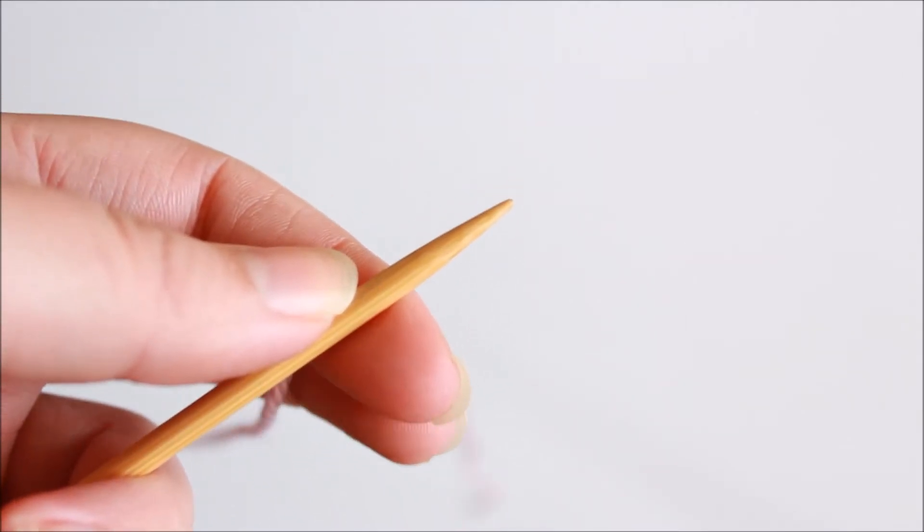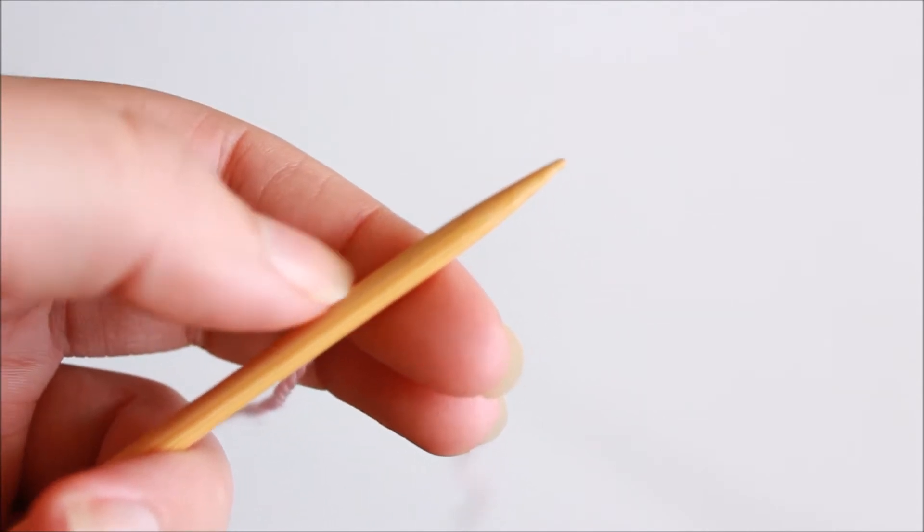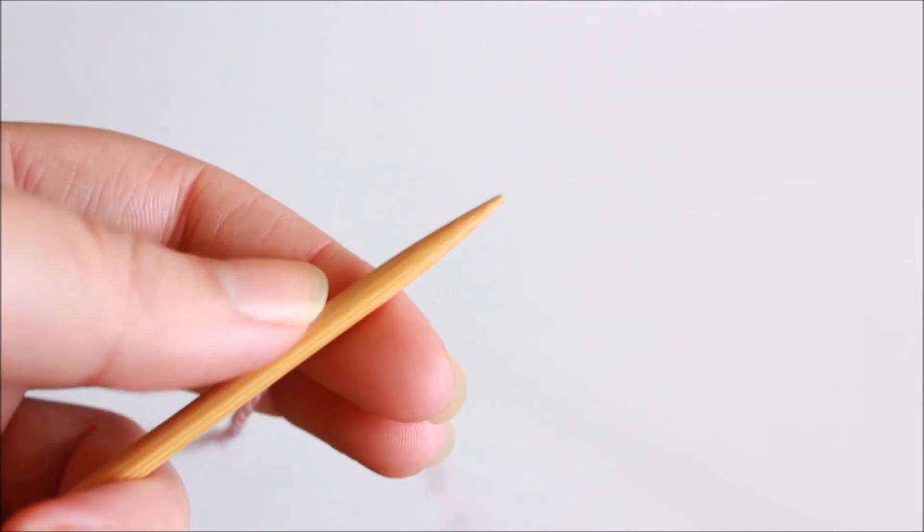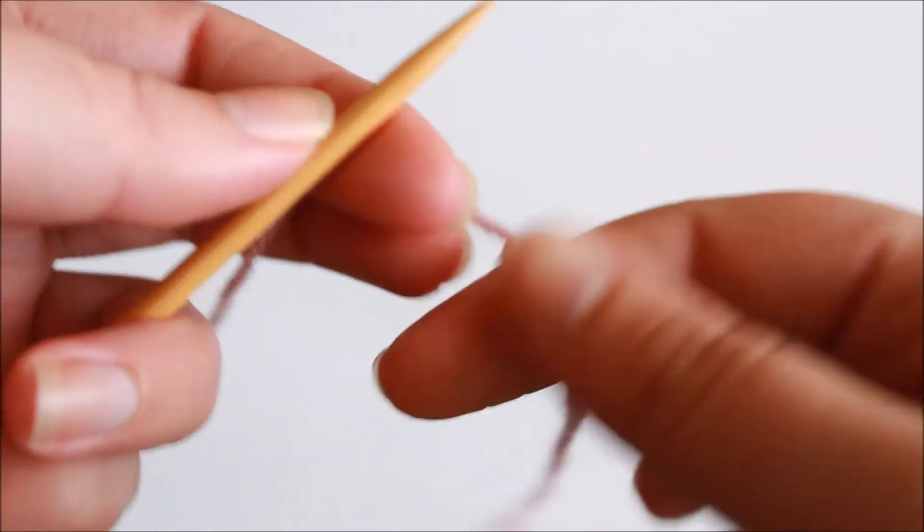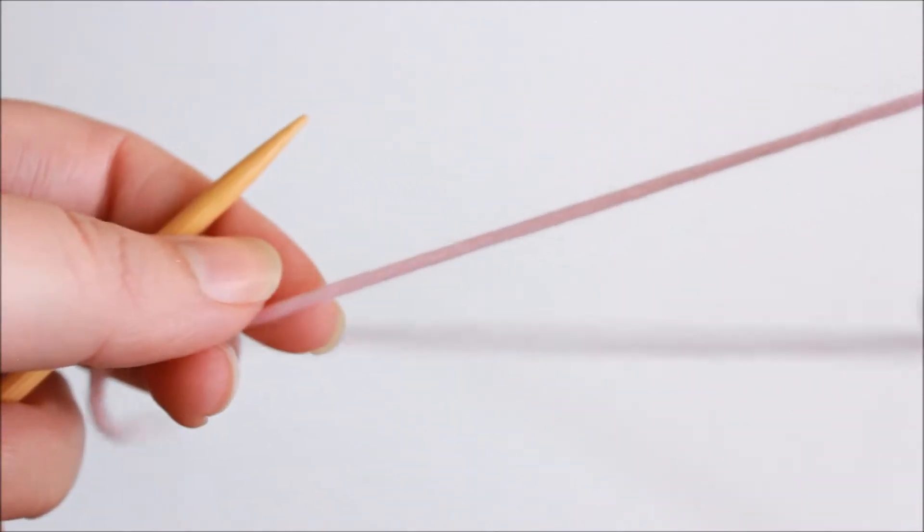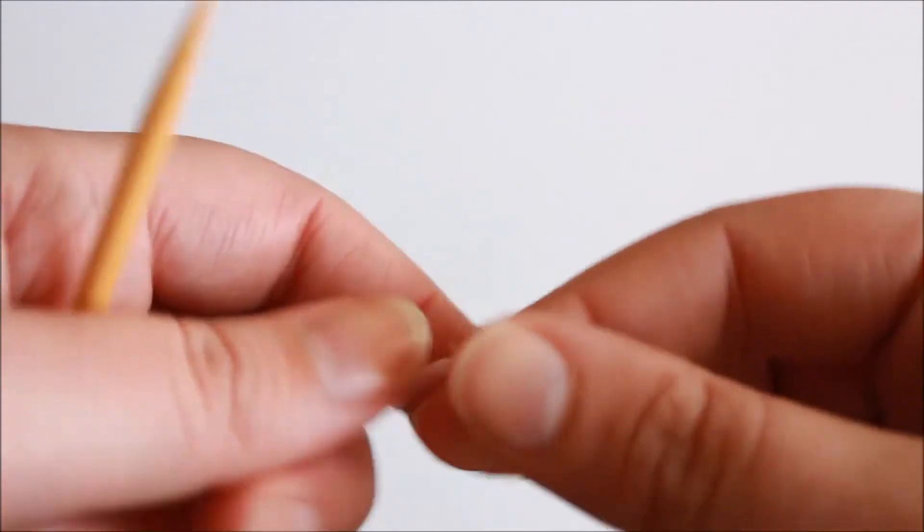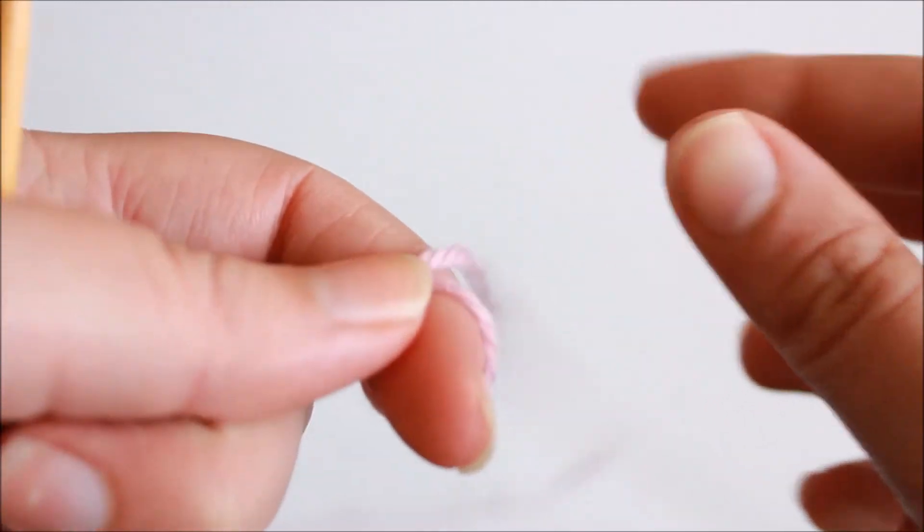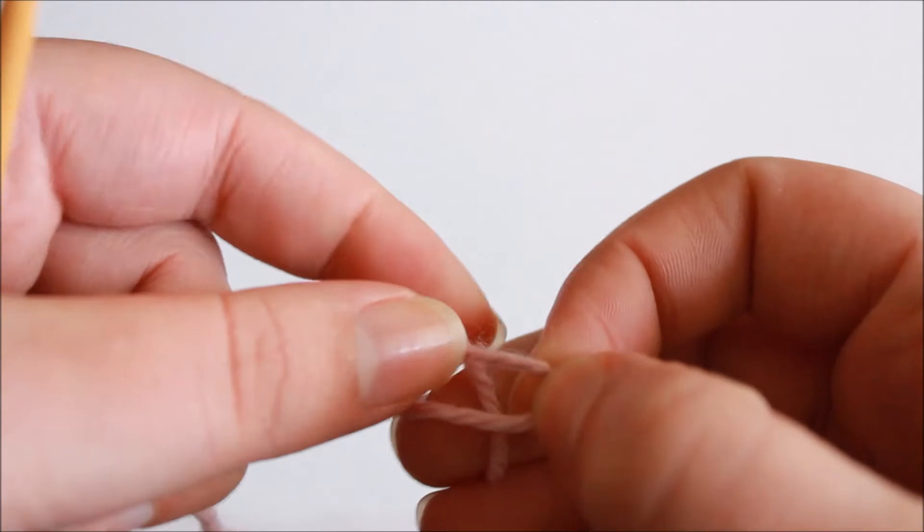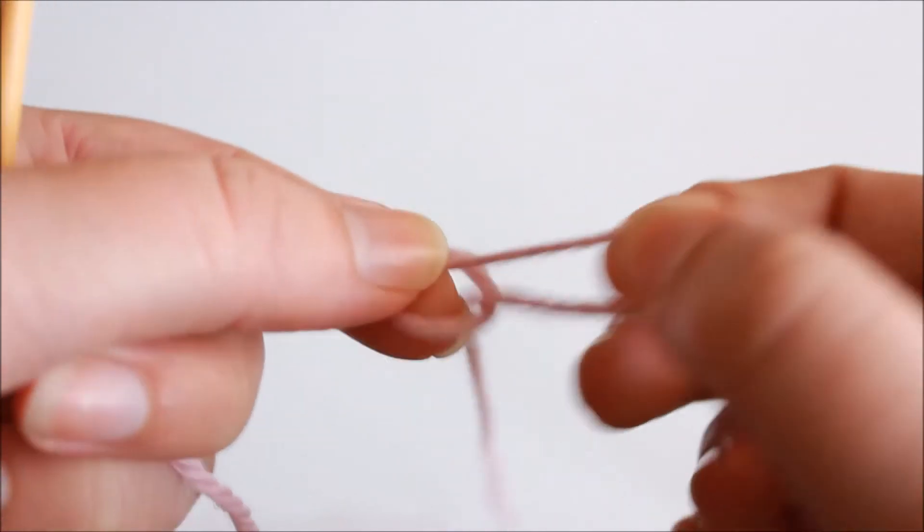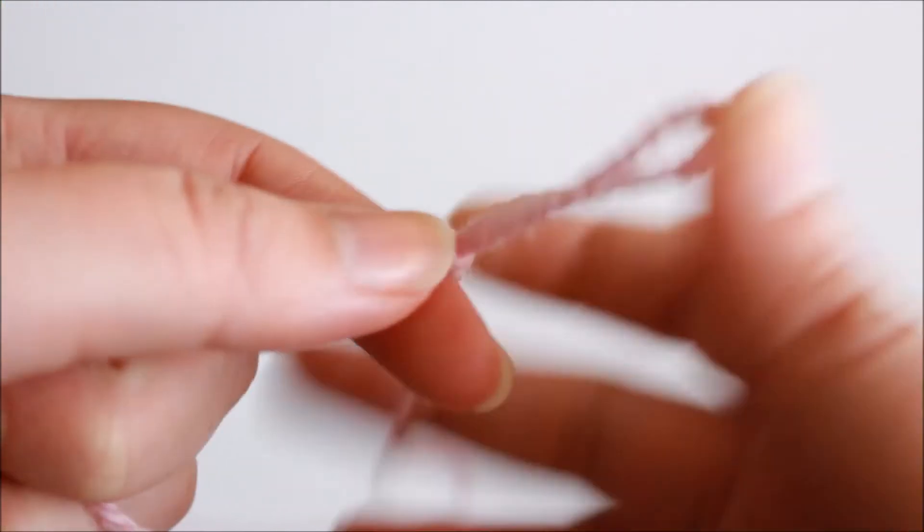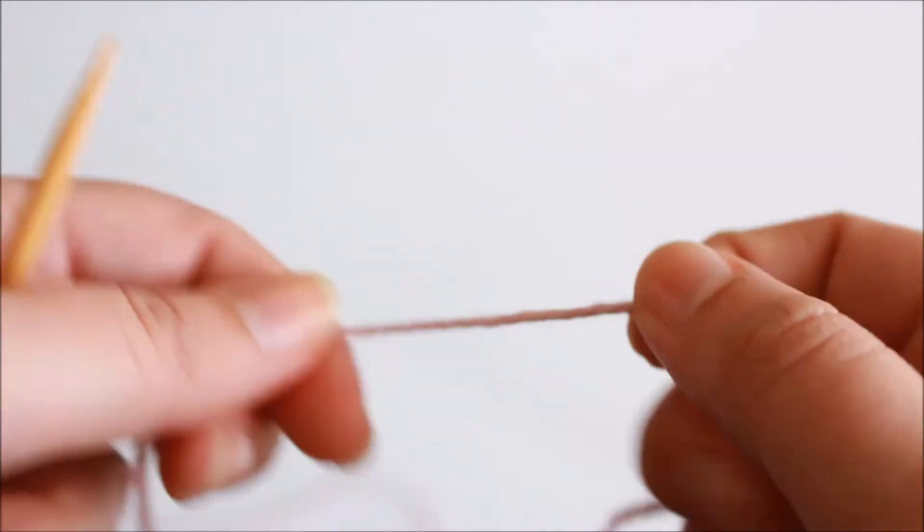To start my cast on I need to create one stitch on my left hand needle and there's two ways I can do this. I can either create a slip knot so I would take my tail end of yarn wrap it once around my index finger and then draw the working yarn through pulling to tighten and that would be a slip knot or I really like to avoid a knot wherever possible in my knitting.